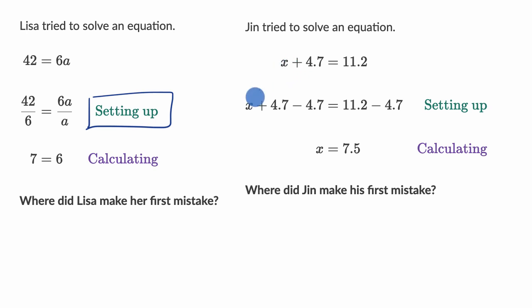It looks like in order to isolate the X on the left-hand side, Jin is subtracting 4.7 from the left, and then also subtracting 4.7 from the right. So that is looking good, doing the same thing to both sides, subtracting 4.7 from both sides.